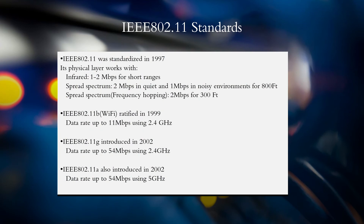IEEE 802.11 was first standardized in June 1997. Its protocol suite included three physical layers depending on the coverage range and environment. The first type of physical layer is based on infrared. Infrared works for short distances and nodes have to be in line of sight of each other. Due to its relatively high frequency, it cannot pass through solid objects like walls. Its transmission rate ranges from 1 to 2 megabit per second.